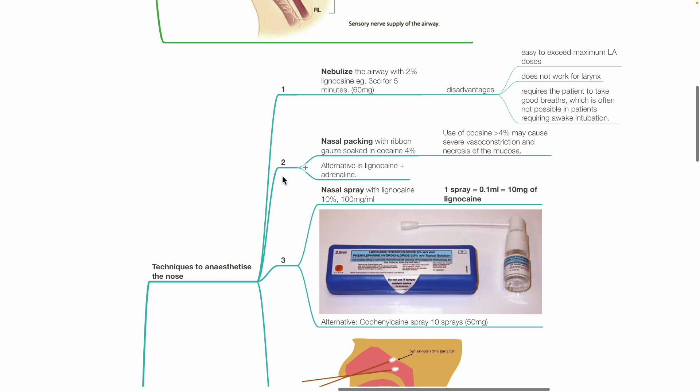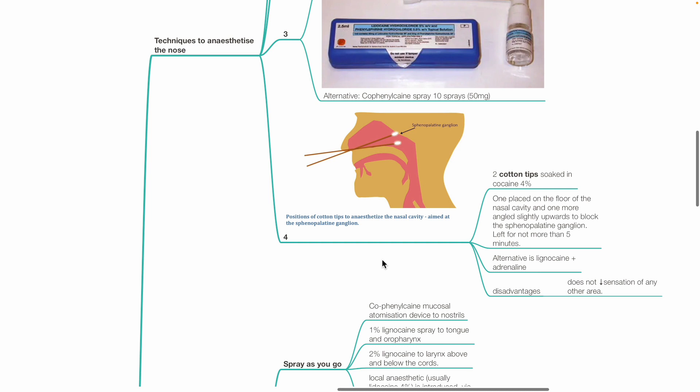The 3rd technique is nasal spray with lidocaine 10%. 1 spray equals 10 mg of lidocaine or 0.1 mls. Alternative is cophenylcaine spray. Cophenylcaine is a combination of lidocaine and phenylephrine. The 4th technique is to place 2 cotton tips soaked in cocaine 4%. One on the floor of the nasal cavity and one more angled slightly upwards to block the sphenopalatine ganglia. They should be left for no more than 5 minutes. Alternative is lidocaine and adrenaline.